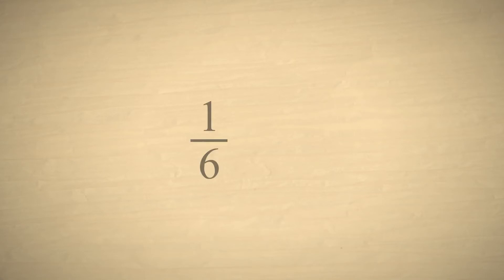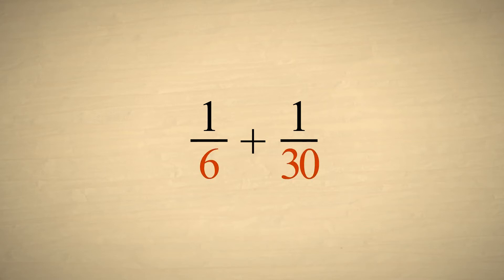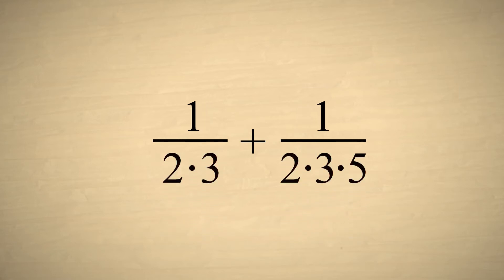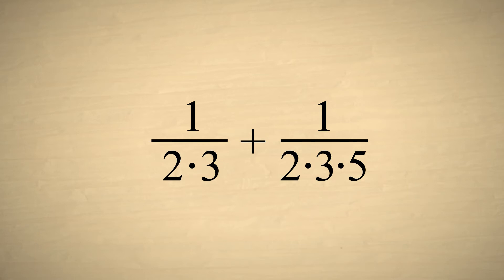As an example, let's say that we want to add one-sixth and one-thirtieth. We must make the denominators of these fractions the same so that we can add their numerators. If we factor each denominator, we can write each of them as a product of prime numbers. Since our goal is to make these two denominators the same, let's see what is making them different.